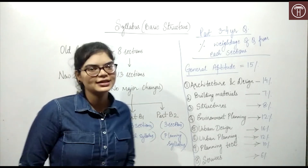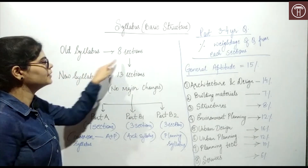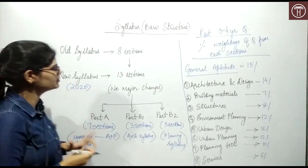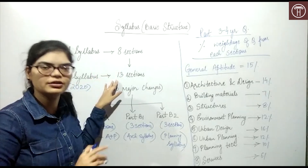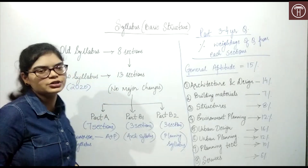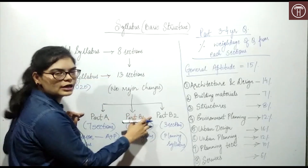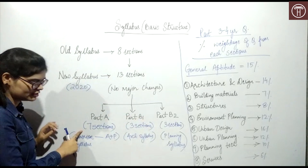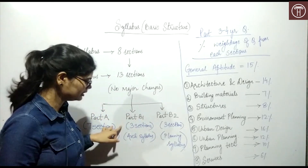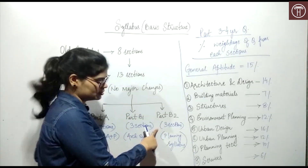After the exam pattern, let's start with the syllabus basic structure. The old syllabus had 8 sections total. The new syllabus, introduced in 2020, is divided into 13 sections. There are no major changes — no major addition or subtraction of any relevant topic. These 13 sections are divided into Part A, Part B1, and Part B2. Part A has 7 sections which are the common syllabus for architecture and planning. Part B1 has 3 sections for the architecture syllabus, and Part B2 has 3 sections for the planning syllabus.